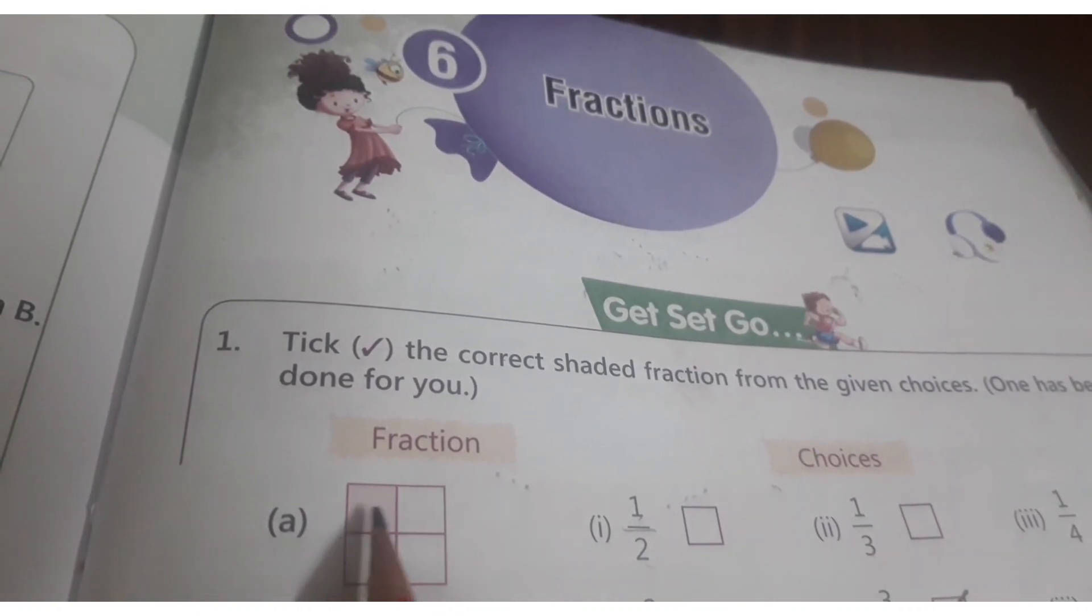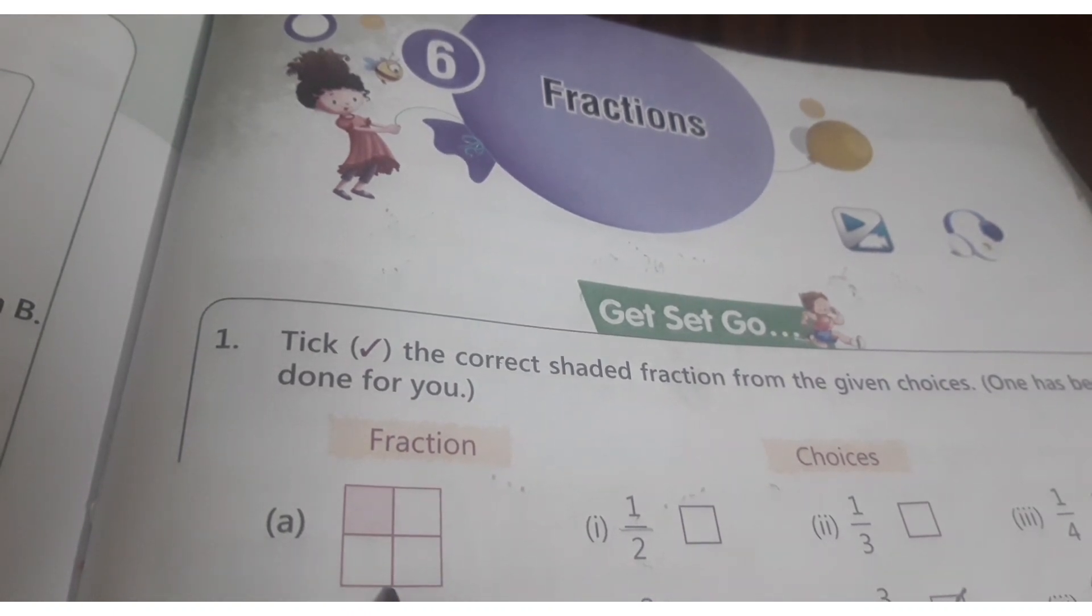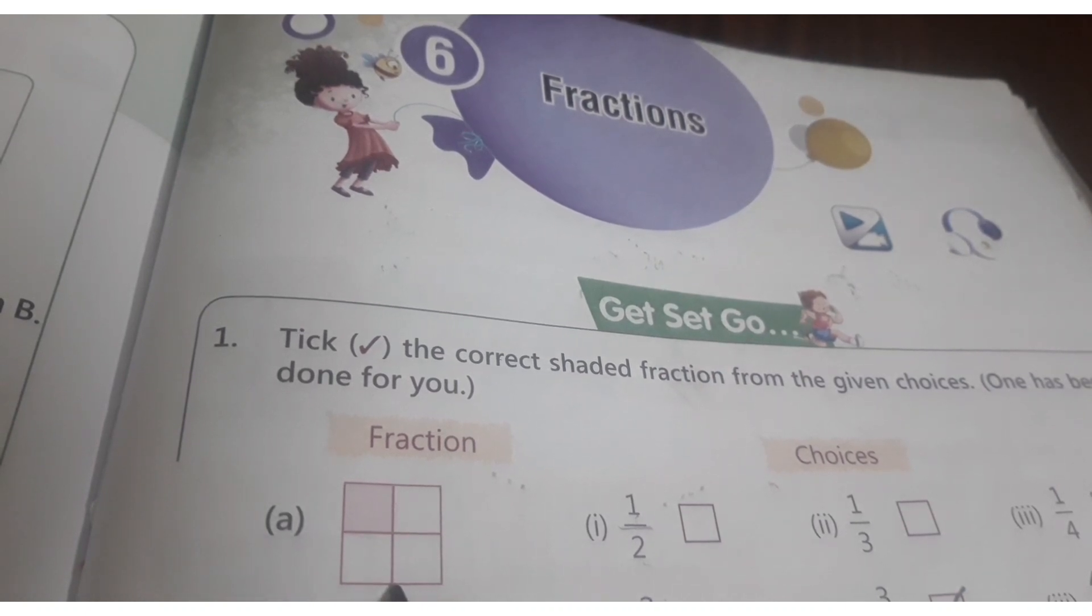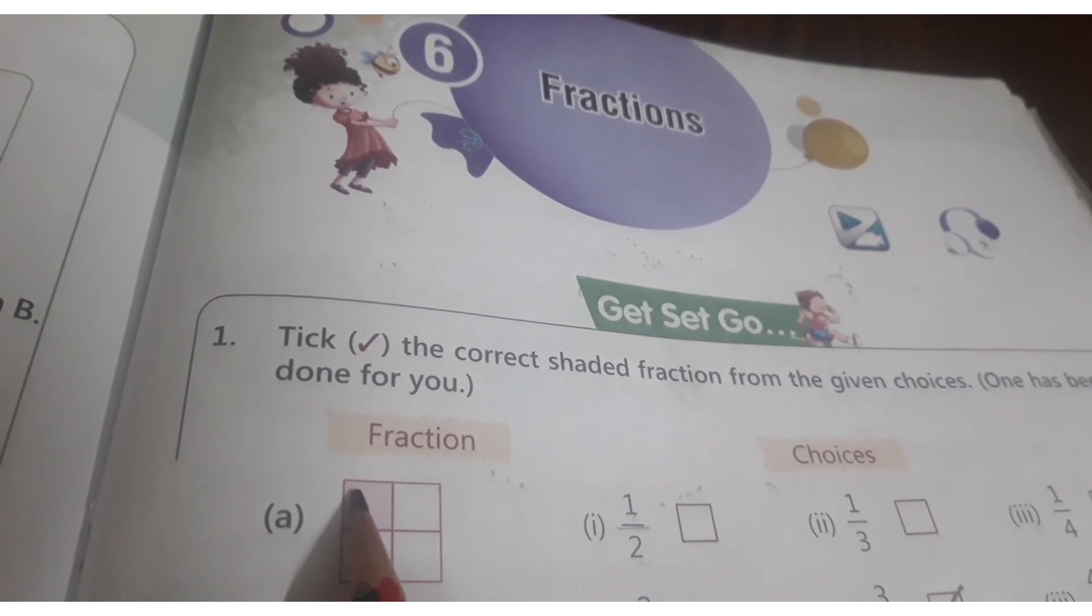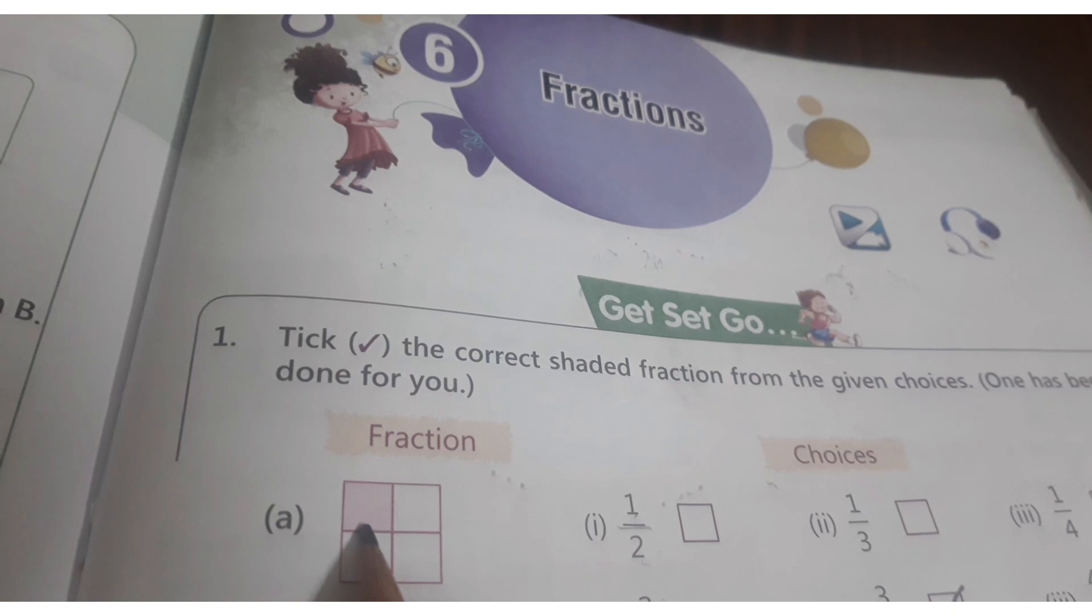So here square box is given and divided into 4 parts. Inside 4 lines are drawn. One box is colored pink. It is shaded in pink color.